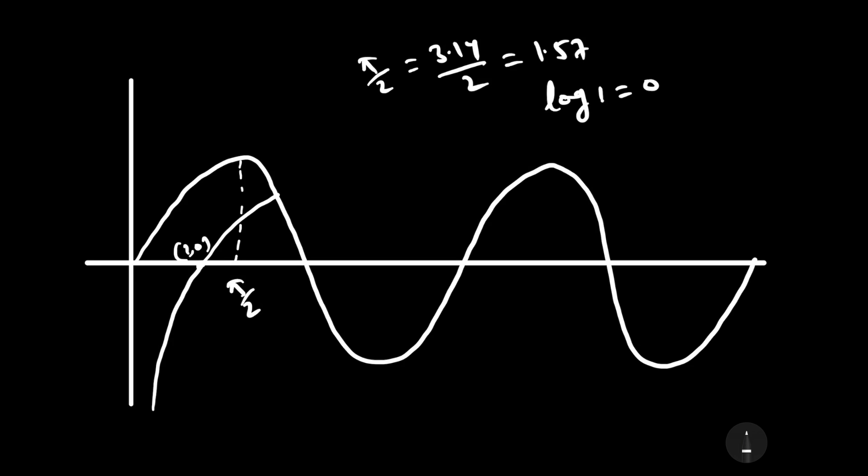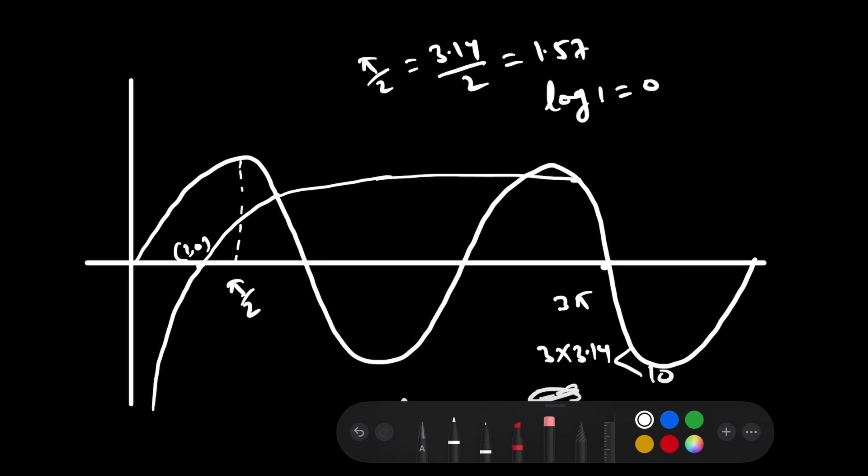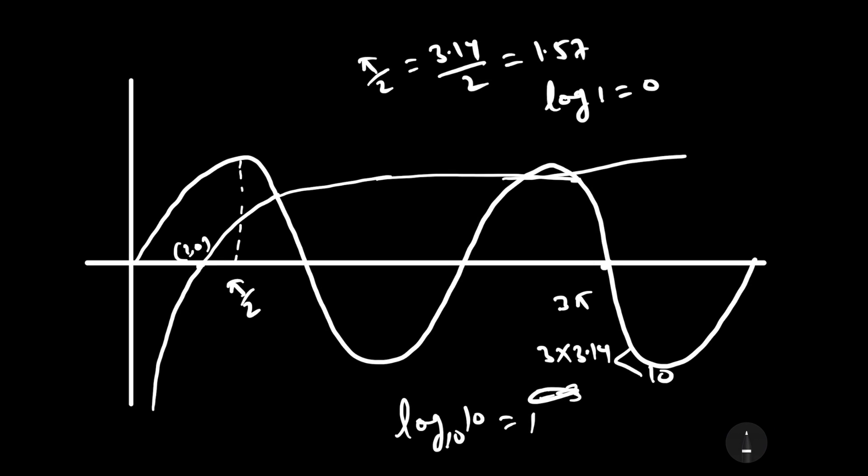This will intersect this graph here, and this will intersect this graph. This is 3π, which equals 3 × 3.14, which means this is less than 10. Log base 10 of 10 gives 1, so 10 will lie somewhere at this point. The graph will look something like this and will intersect at this point, and this point will be 10.